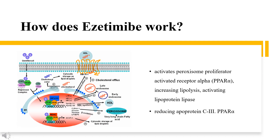Ezetimibe mediates its blood cholesterol-lowering effect by selectively inhibiting the absorption of cholesterol and phytosterol by the small intestine without altering the absorption of fat-soluble vitamins and nutrients. The primary target of ezetimibe is the cholesterol transport protein Niemann-Pick C1-Like 1 (NPC1L1). NPC1L1 is expressed on enterocytes at the gut lumen apical surface, as well as the hepatobiliary canalicular interface, and plays a role in facilitating internalization of free cholesterol into the enterocyte in conjunction with the adapter protein 2 (AP2) complex and clathrin.